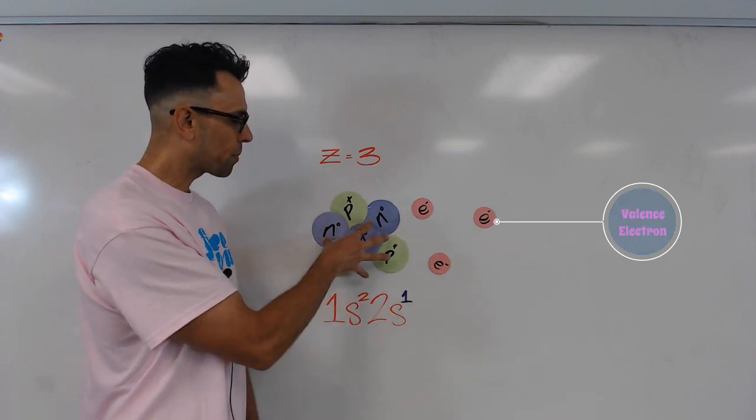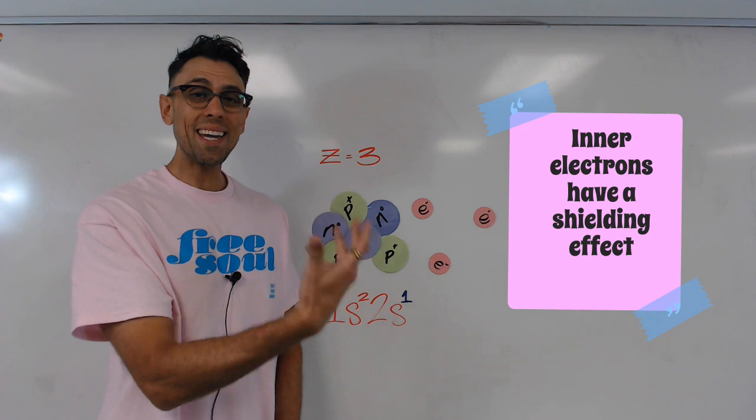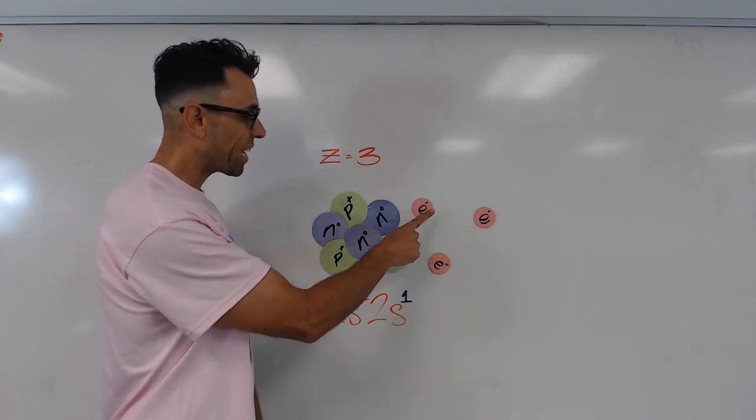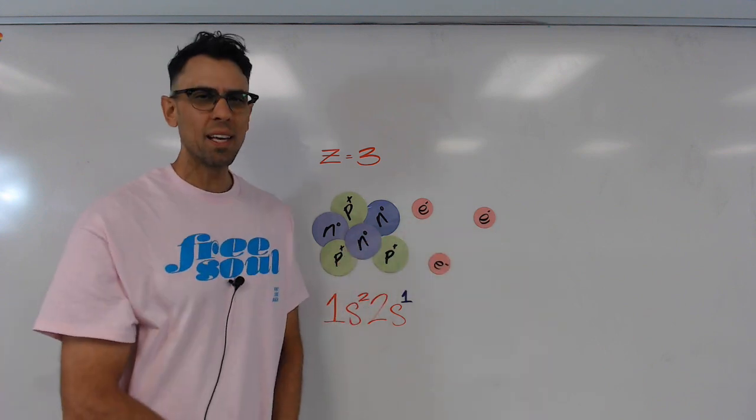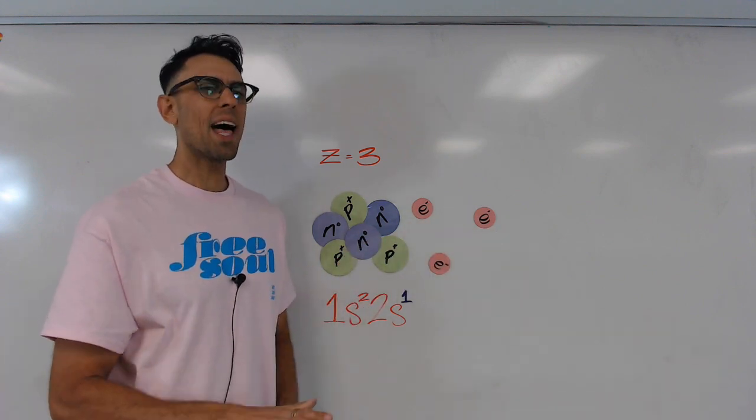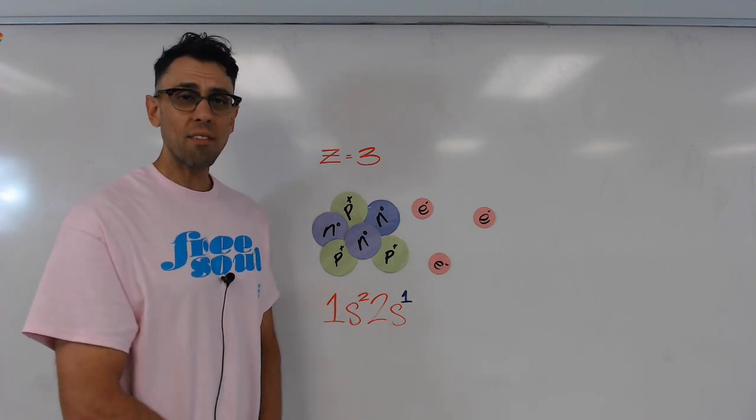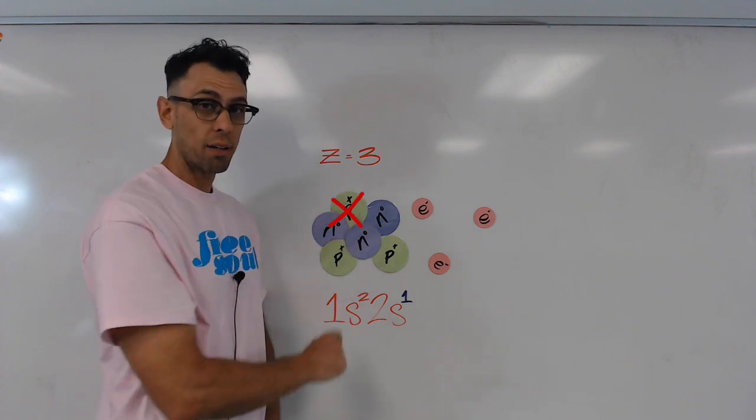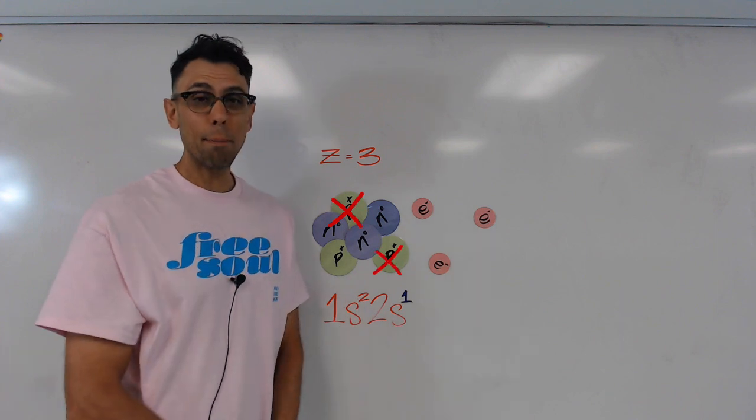Some of that pull from the nucleus is blocked or shielded by the inner electrons. So actually, for every inner electron there is between the valence electron and the nucleus, that's going to sort of cancel out the pull of one of the protons. So you can think of it as this electron canceling out the pull of this proton, and this electron canceling out the pull of that proton.